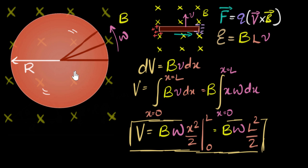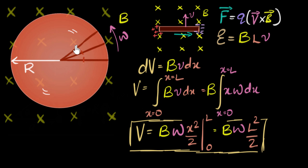A question that comes to mind is: all these pieces are touching each other — wouldn't that cause charges to move and change things? Remember, charges only move if there is a potential difference. At a given radius, the potential everywhere along that circle is the same. So charges have no reason to move tangentially from piece to piece. The fact that the pieces are touching each other makes no difference.